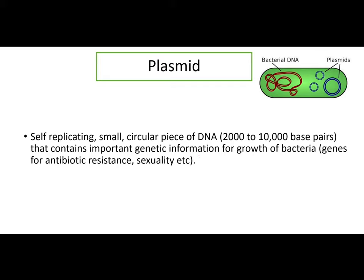Looking at this definition again, there are some important things in it. First, this plasmid is self-replicating, meaning it is a small circular piece of DNA. Just look at this figure drawn above — this is the normal DNA, and this plasmid is self-replicating. Its DNA size can vary from 2000 to 10,000 base pairs.